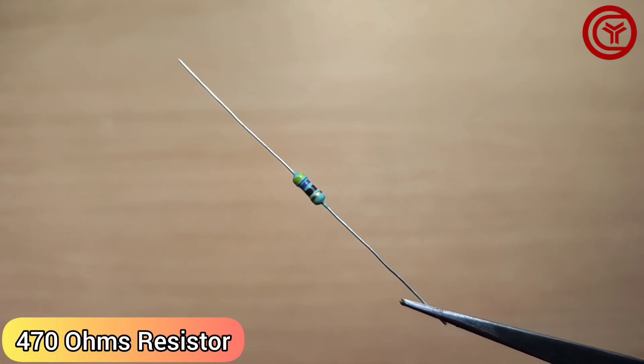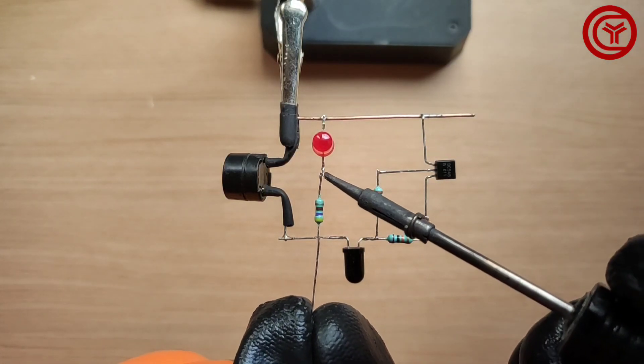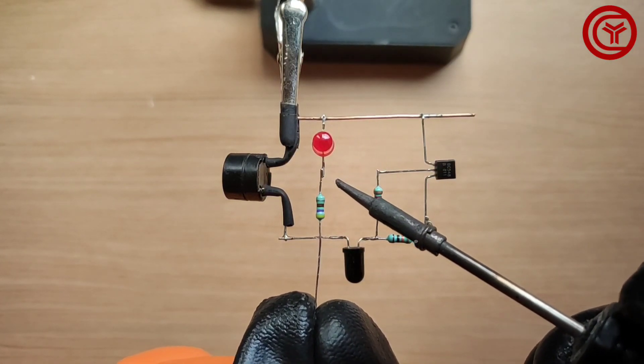Take a 470 ohm resistor and solder it between the red LED positive and IR negative.